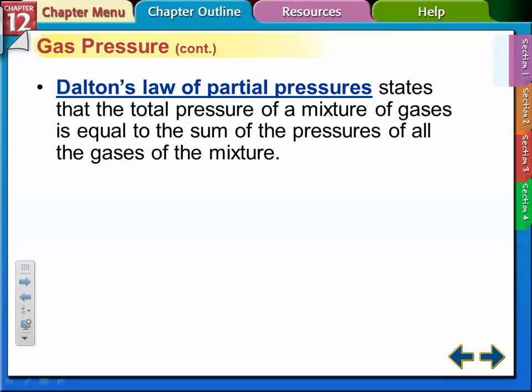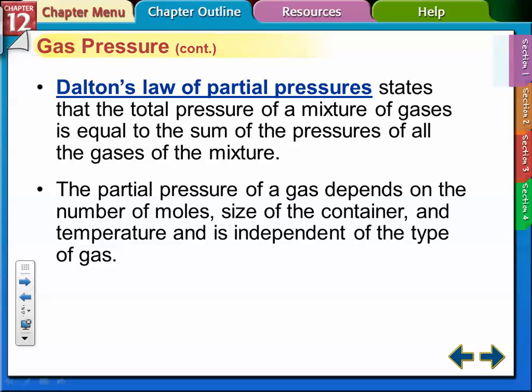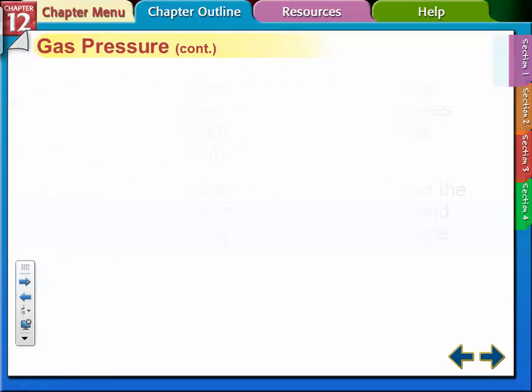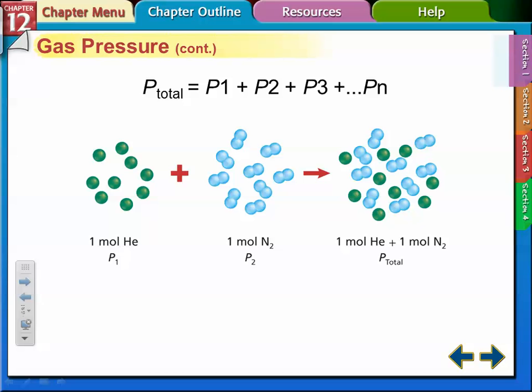Dalton's law of partial pressures states that the total pressure of a mixture of gases is equal to the sum of the pressures of all the gases in the mixture. The partial pressure of a gas depends on how much gas you have—the number of moles, the size of the container, the temperature—and it's independent of the type of gas, so it doesn't matter what kind of gas it is. It's simple math: the total pressure of two gases, like helium and nitrogen, is just adding the individual pressures together.